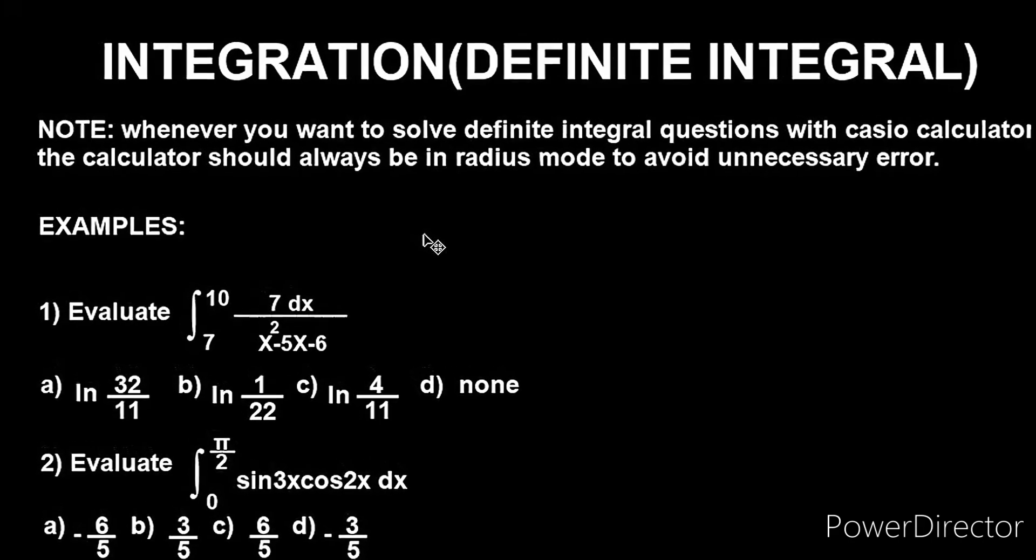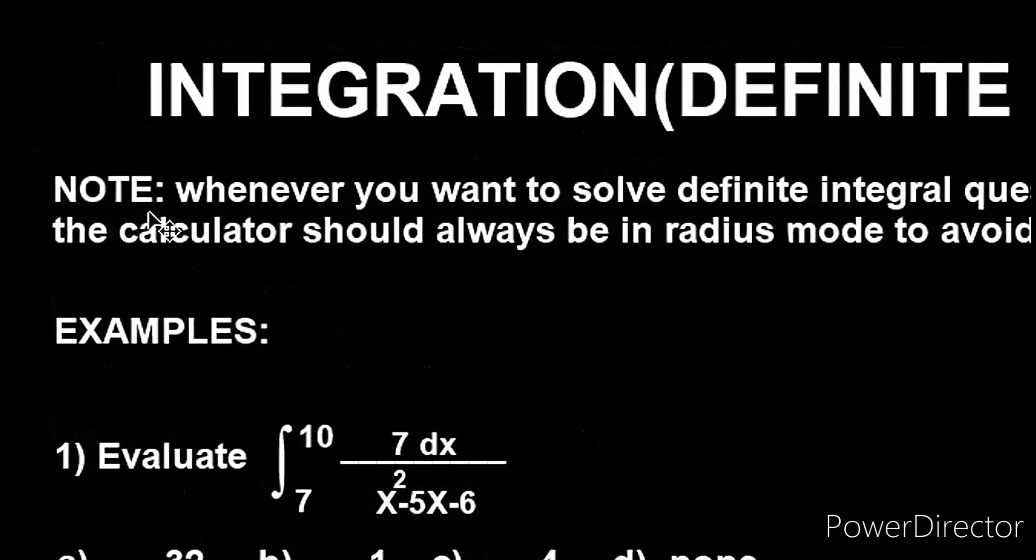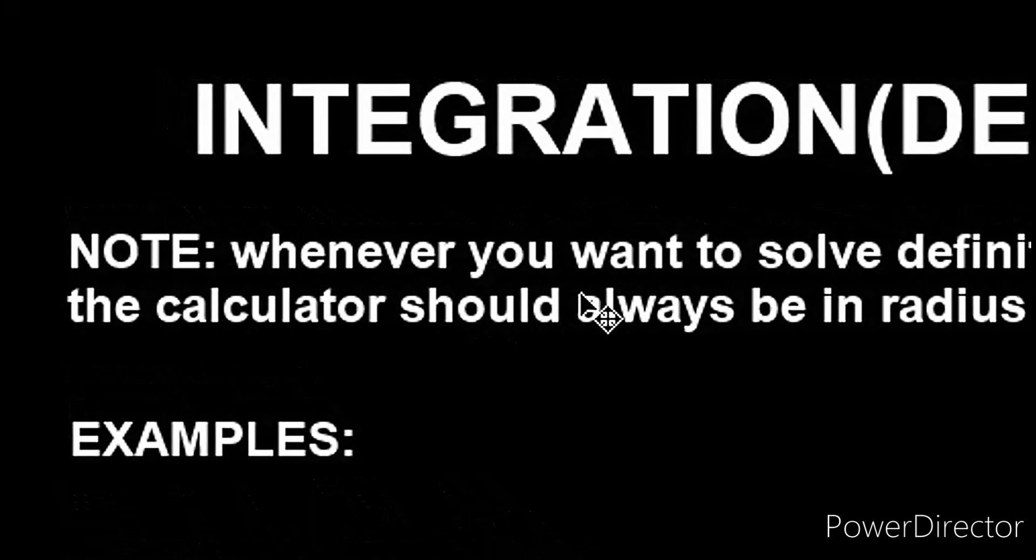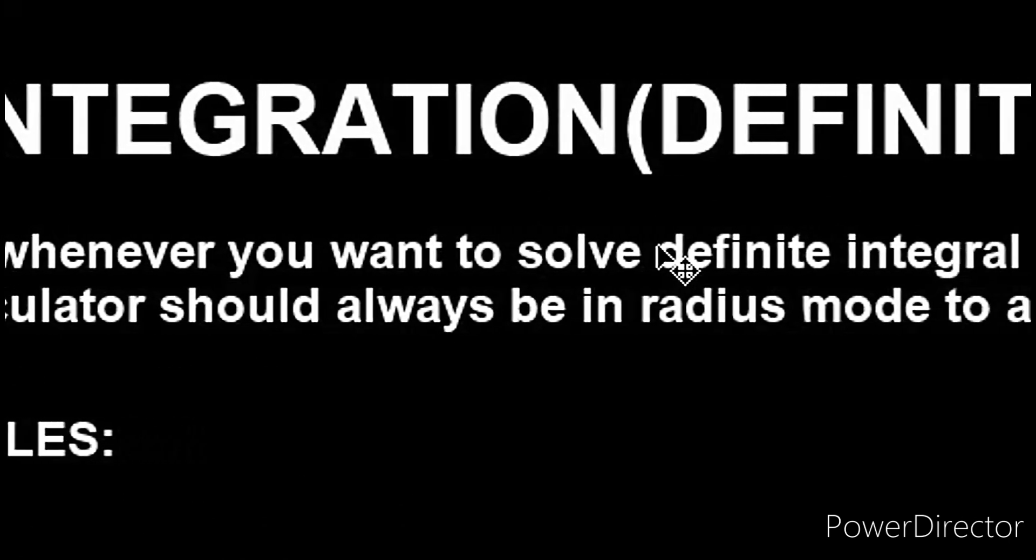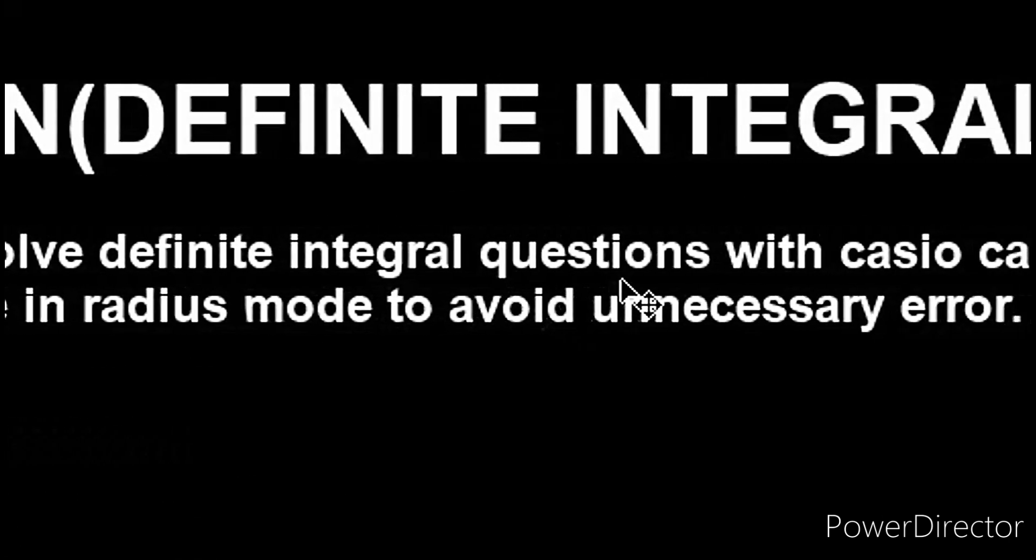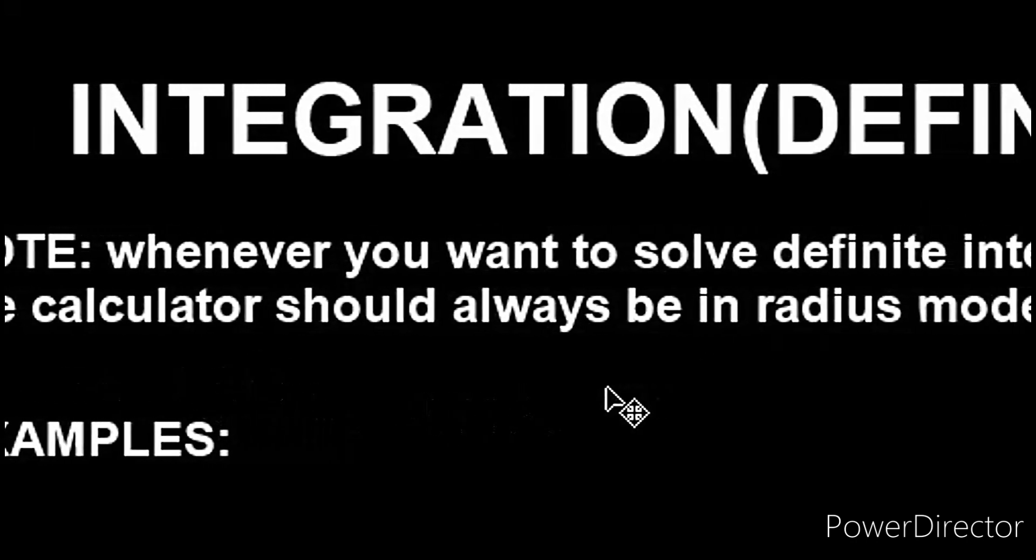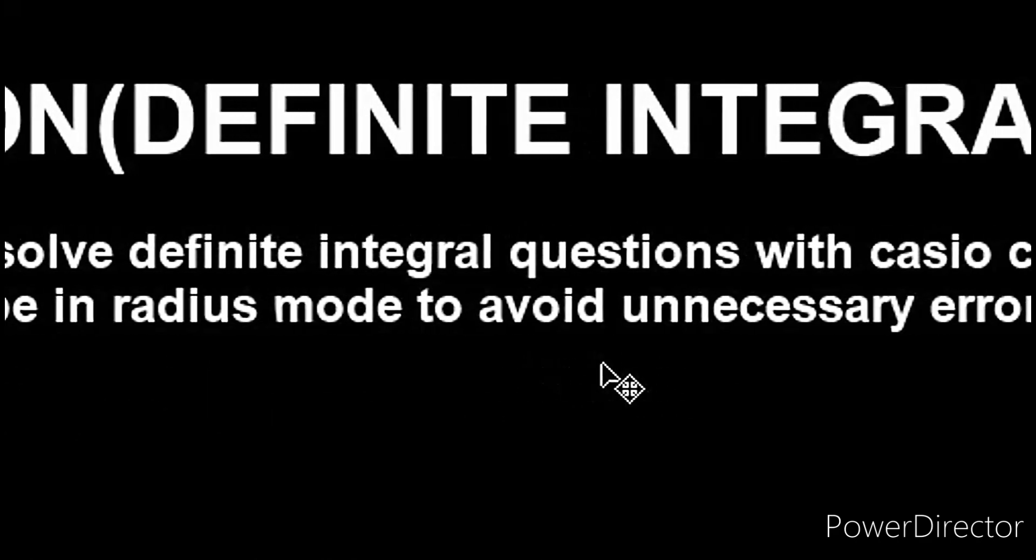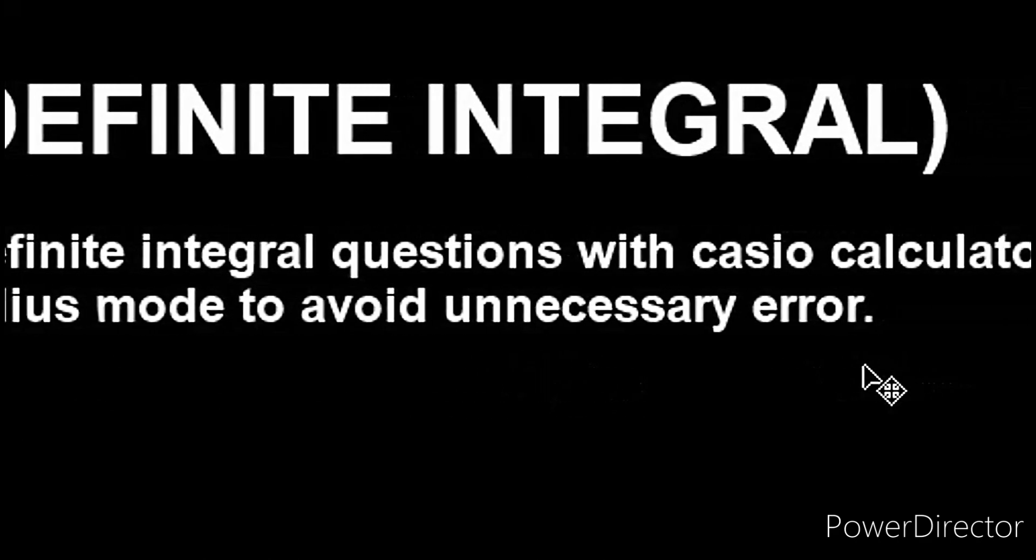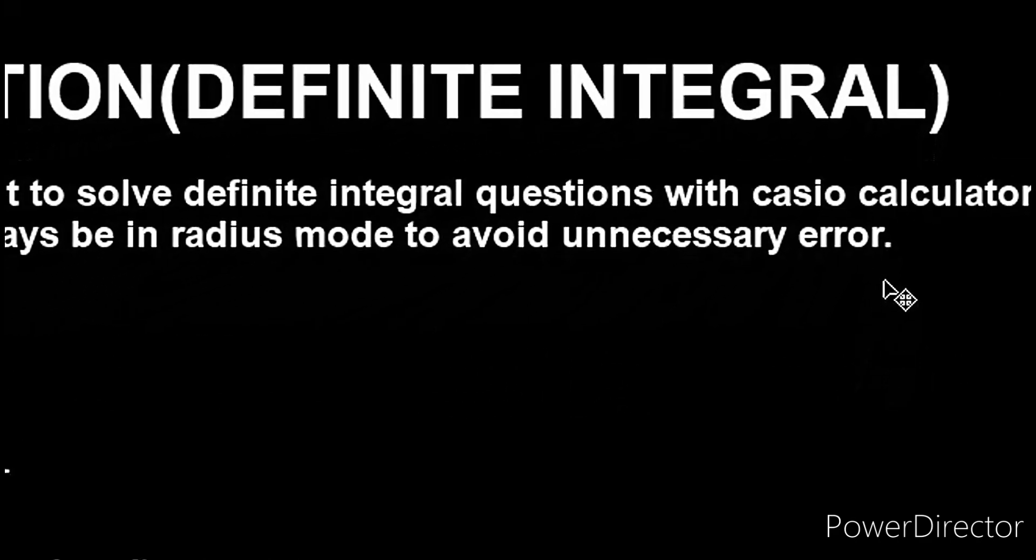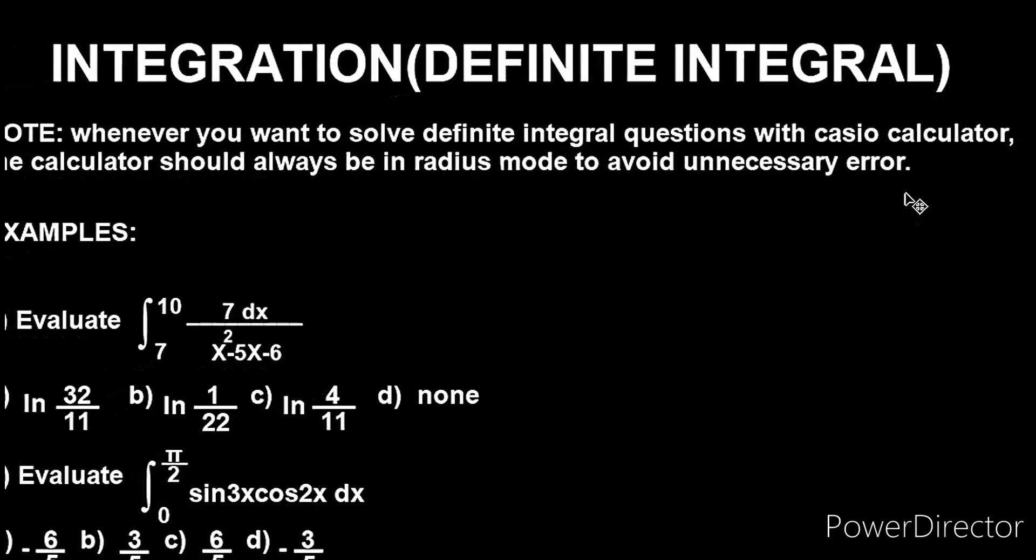Okay let's begin. Now know that whenever you want to solve definite integral questions with Casio calculator, the calculator should always be in radian mode to avoid unnecessary error. Very very important, so take note of this point.